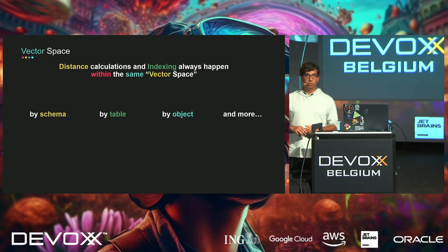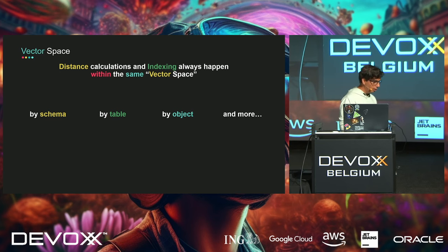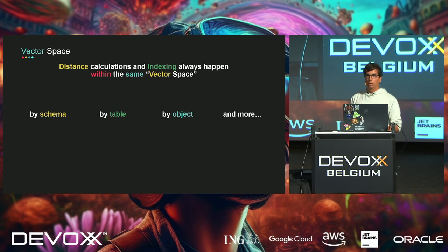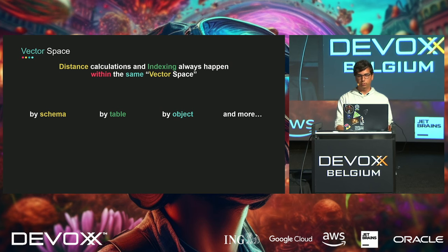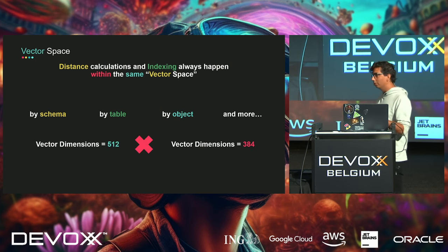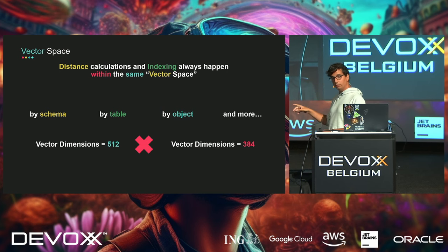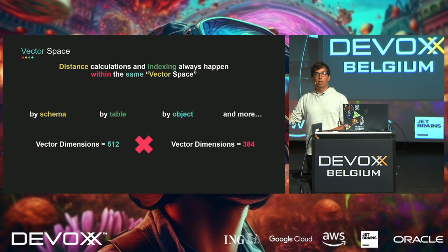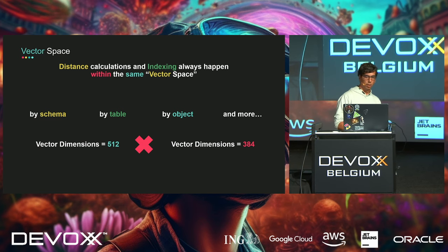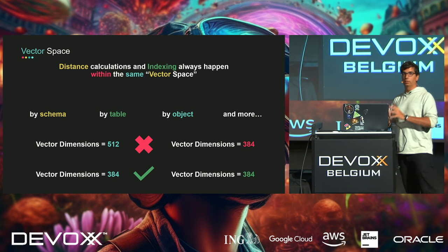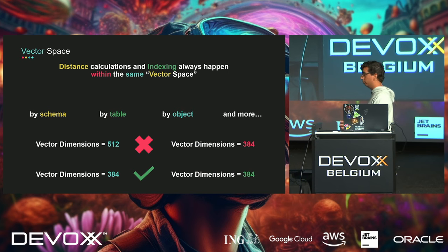A 'vector space' — sounds straight out of Star Wars. You can define your vector space by schema, table, object, and more; a different table would be a different vector space. This exists because if you have a vector with 512 dimensions you don't want to be indexing it against vectors with 384 dimensions. You always want vectors with the same dimensionality to be indexed against each other, otherwise you'll get very inaccurate results.